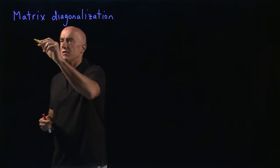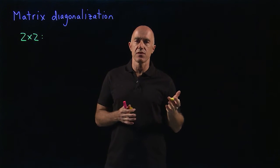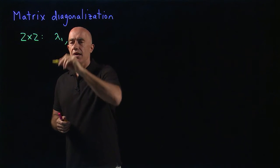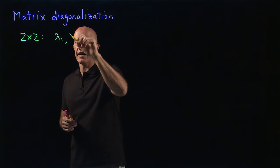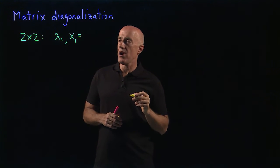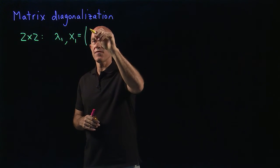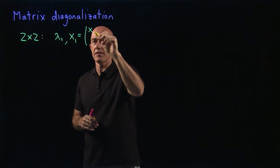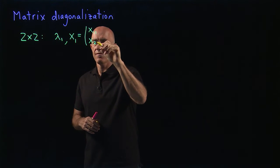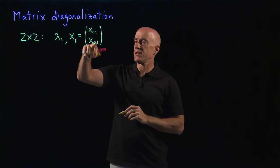So let's start with a 2 by 2 matrix. Let's say we have 2 eigenvalues and 2 linearly independent eigenvectors. So we have lambda 1, and then the eigenvector is x1. I'm going to use a notation where x1 looks like the first column of some matrix. The first component of x1 I'll write as x11, and the second component I'll write as x21 — row 2, column 1. So this is the eigenvector.